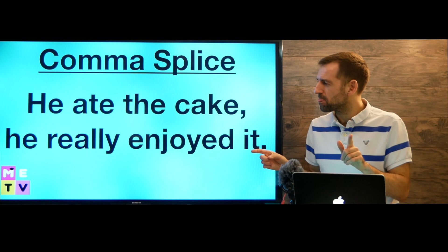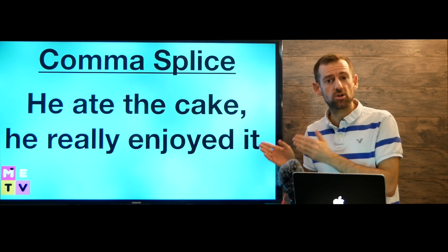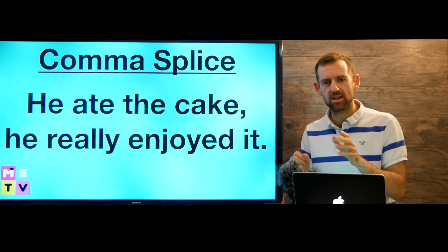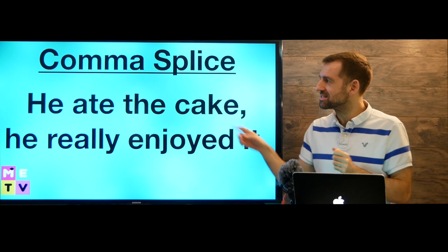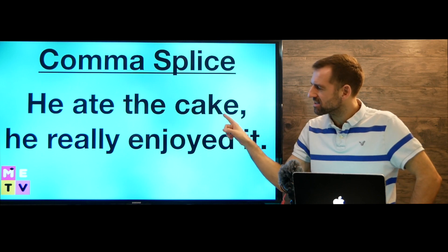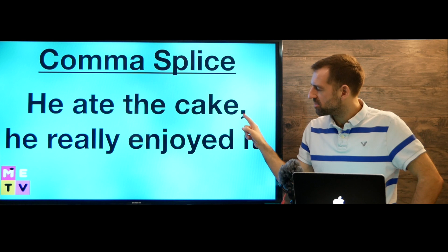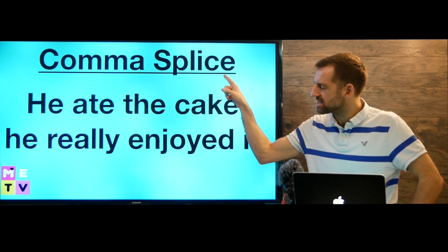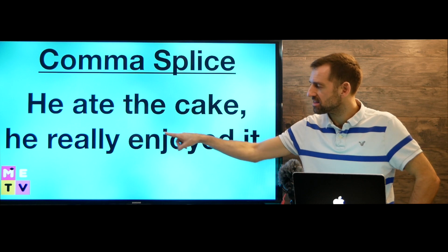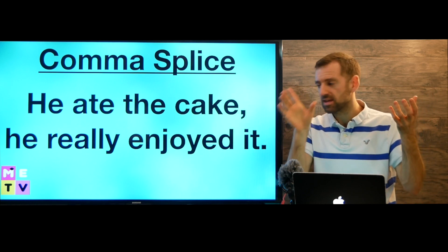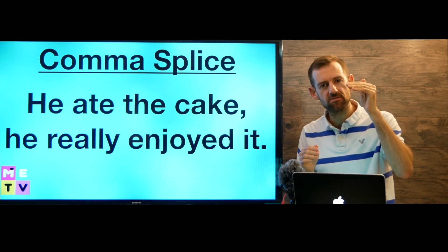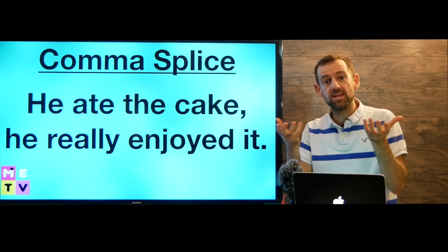But there are some mistakes people make using commas that are always a mistake. You can't just use a comma anywhere you want. This is a really common mistake ESL students make — they write: 'He ate the cake, he really enjoyed it.' This is a mistake called the comma splice. It's a mistake because each part is a separate sentence. 'He ate the cake. He really enjoyed it.' A comma is not powerful enough to join two pieces that could each be their own sentences.